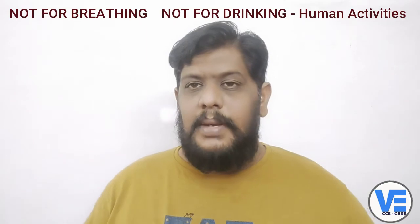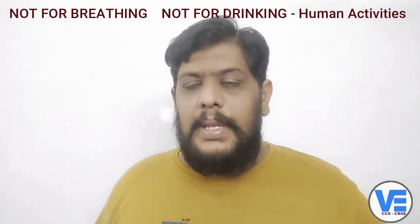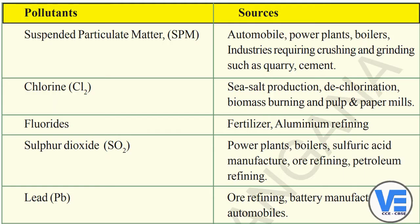Pulp and paper mills, where papers are made using pulp, also release chlorine into the air, causing air pollution.